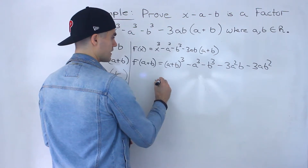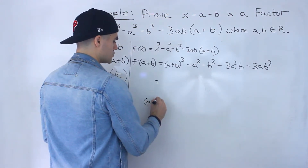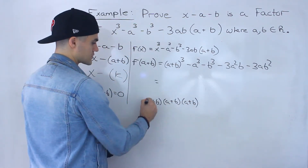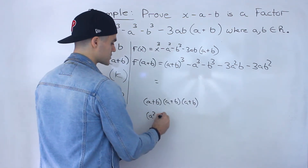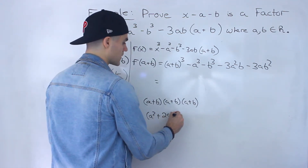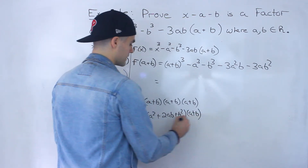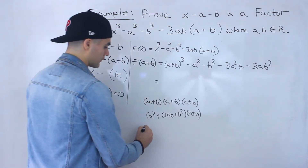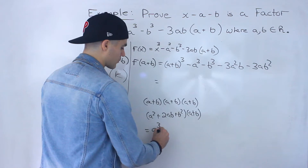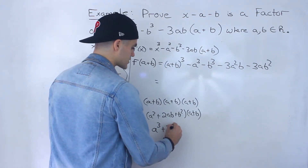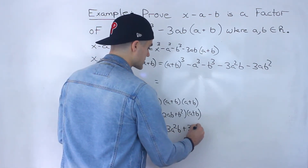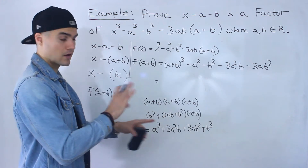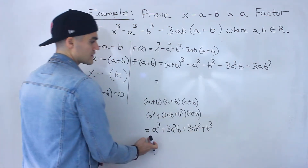To expand (a plus b) cubed, you can use Pascal's triangle if you remember that from grade 11, or you can FOIL it out. First foil the two brackets: (a plus b)(a plus b) gives a squared plus 2ab plus b squared, and then multiply that result by (a plus b). If you foil all of that out and simplify the like terms, you end up with a cubed plus 3a squared b plus 3ab squared plus b cubed.